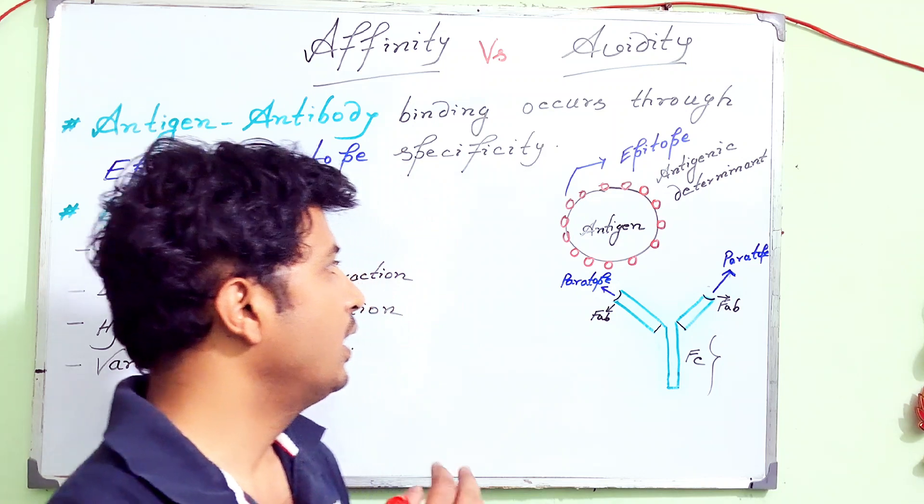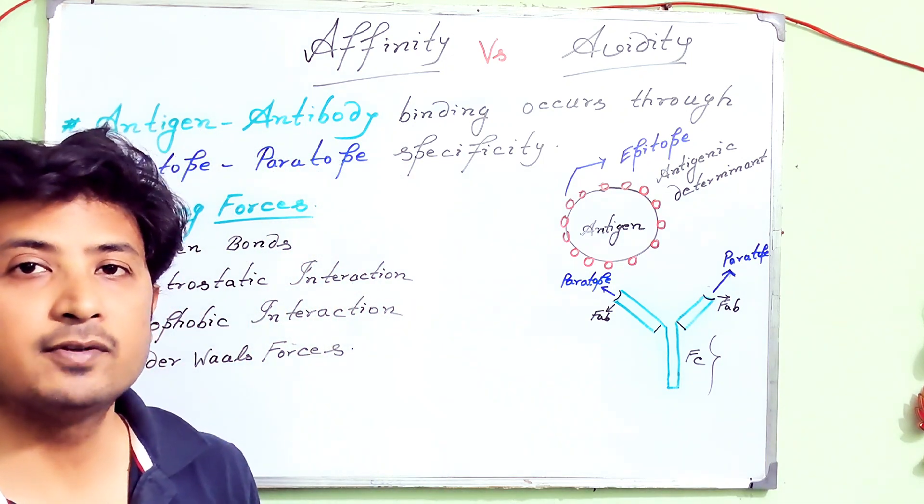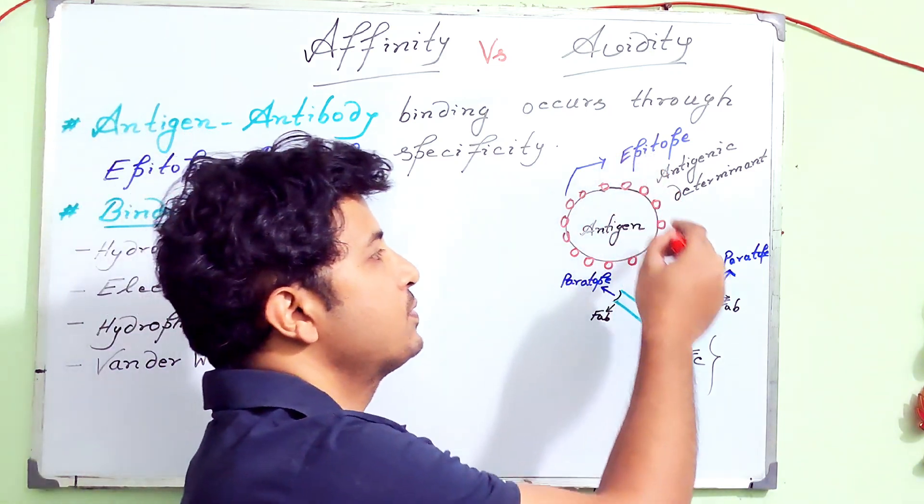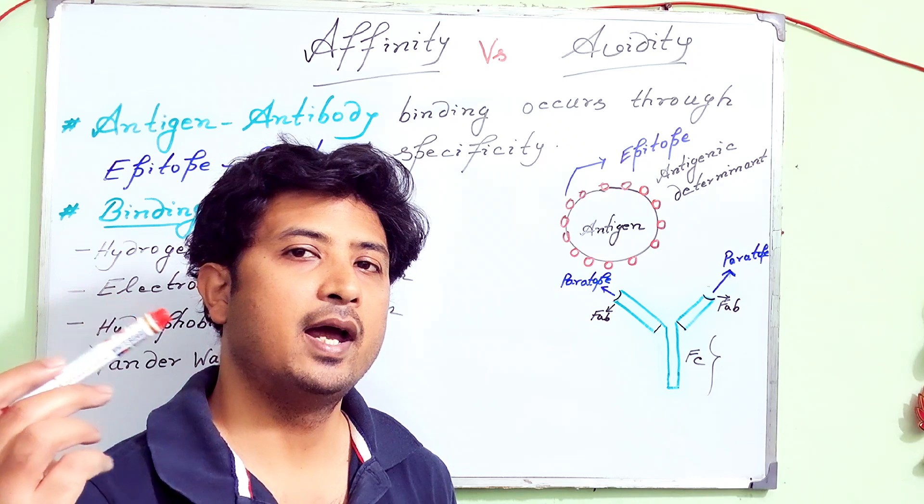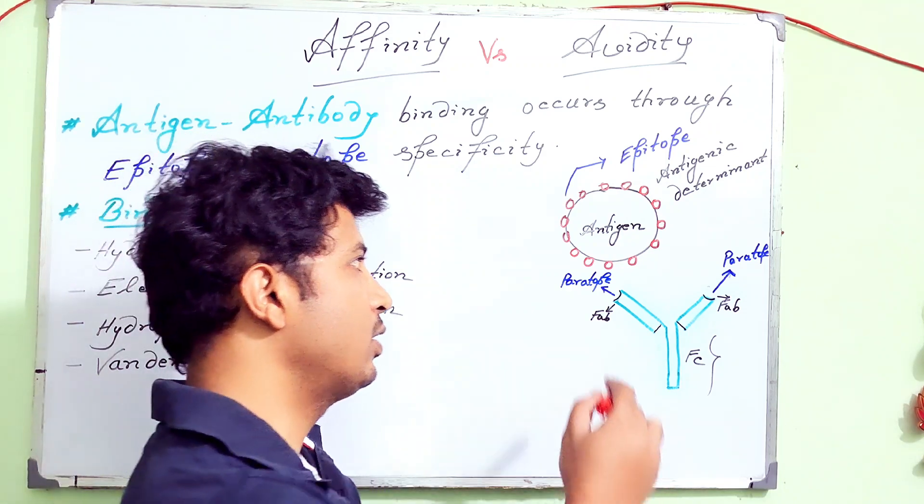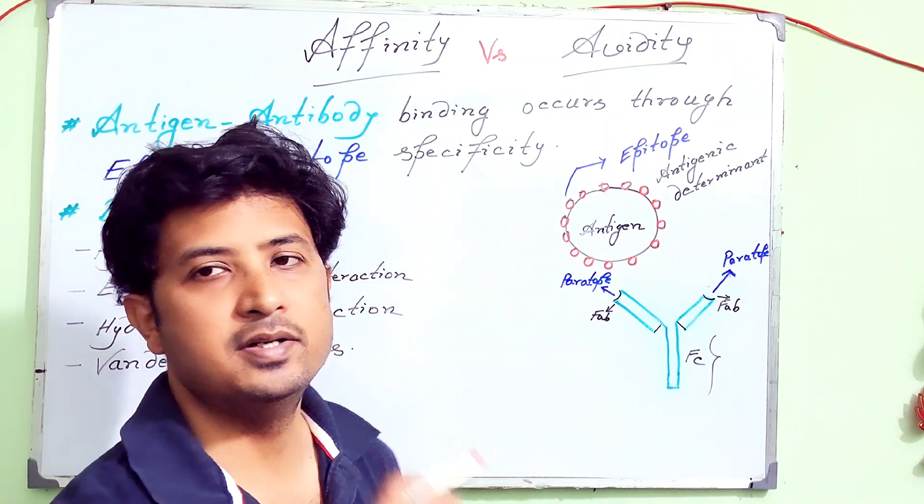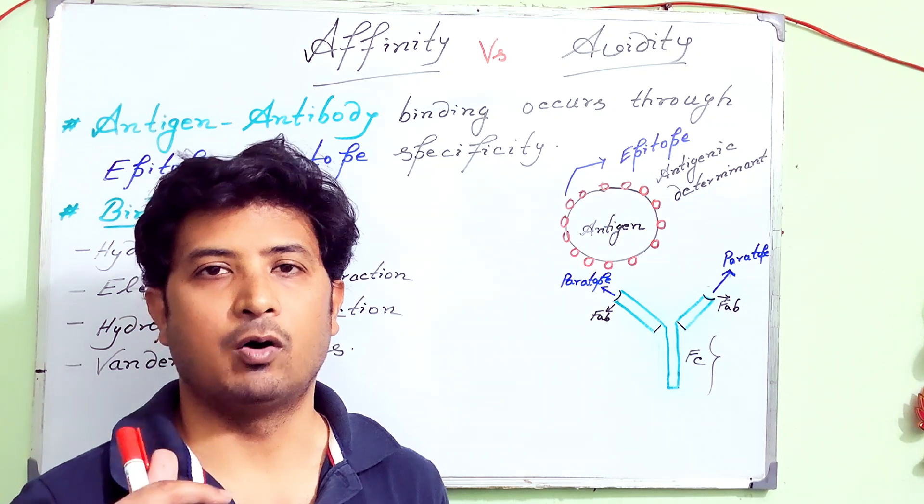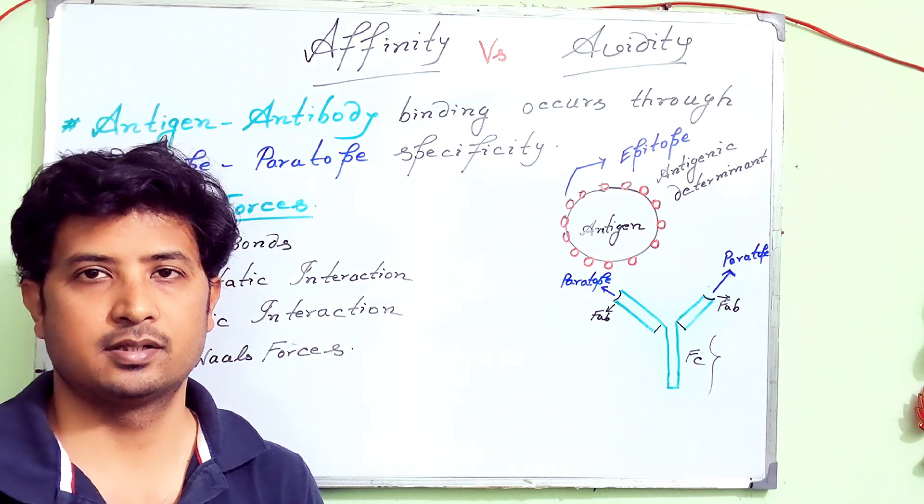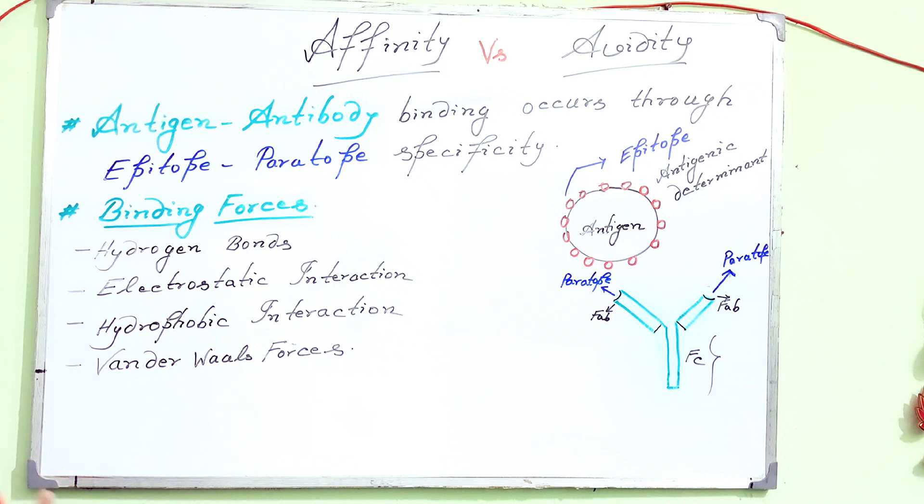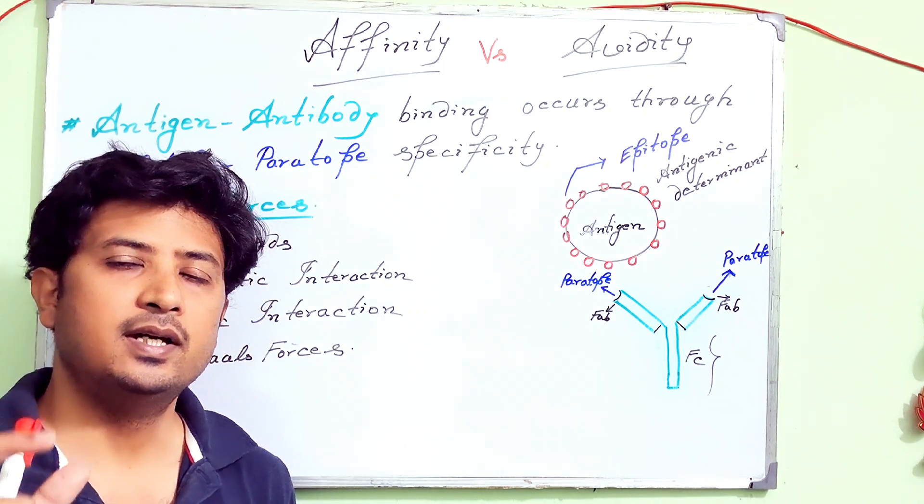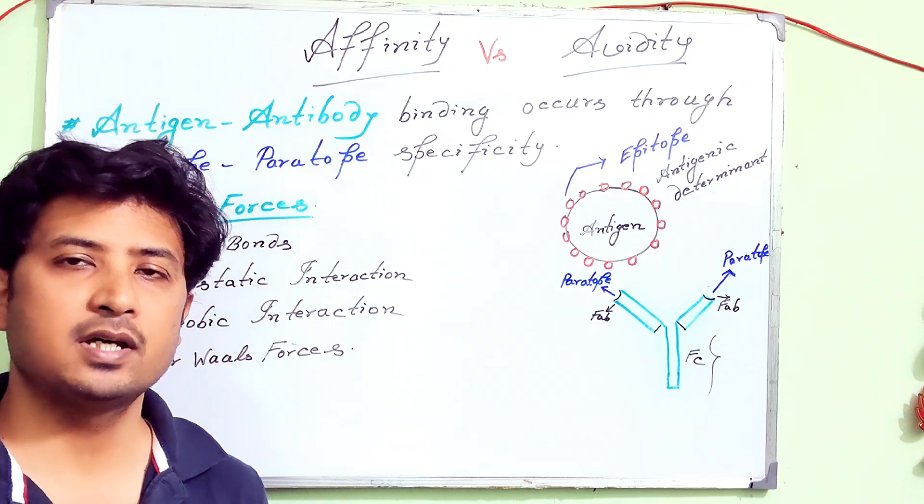What is parotope? Parotope is present on the antigen binding sites of the antibody, where the antigen epitopes are going to bind. Parotope is present on the antibody, epitope present on the antigen. This epitope-parotope interaction or binding is mediated through very essential weak interactions: hydrogen bonds, electrostatic interaction, hydrophobic interactions, and Van der Waals interactions. For all these interactions to happen, the antigen and antibody must come in very close proximity.